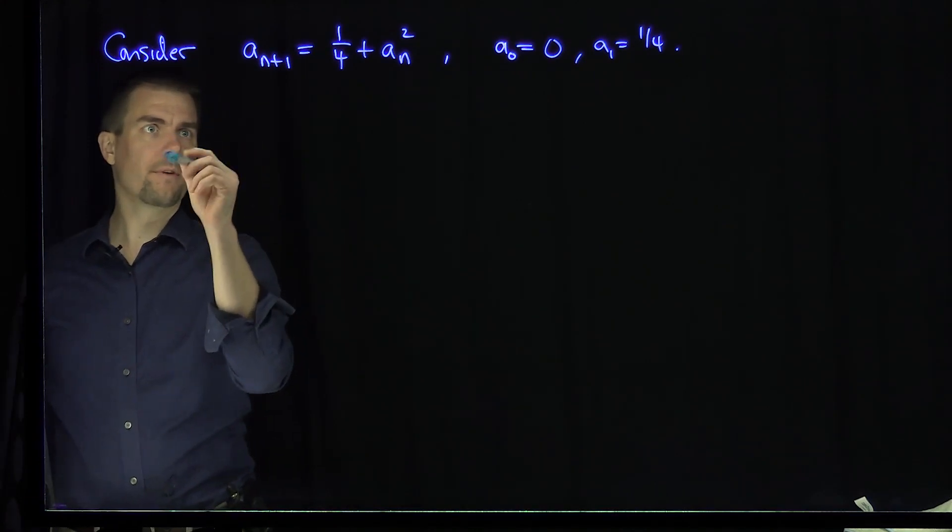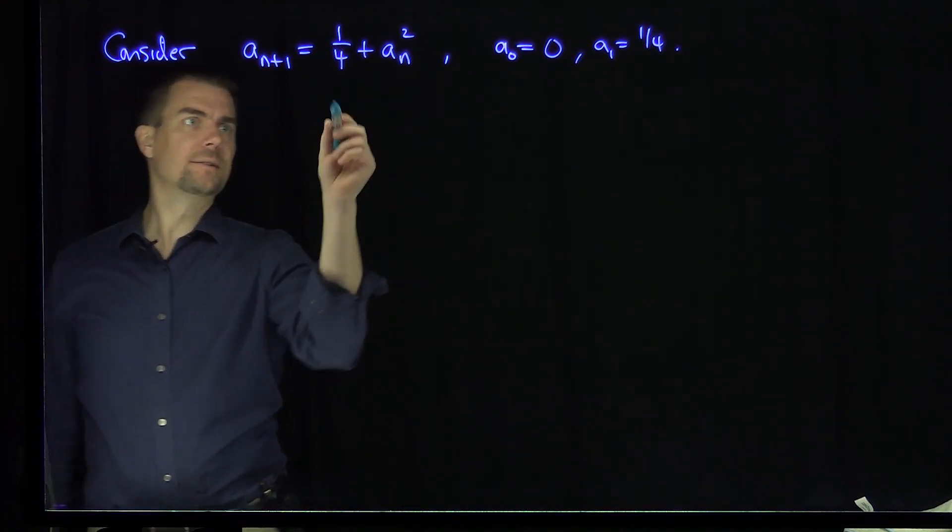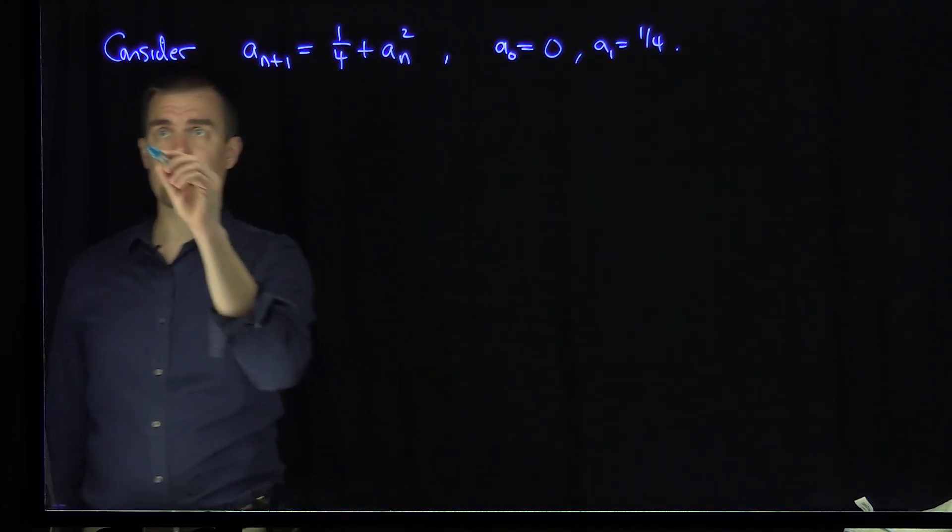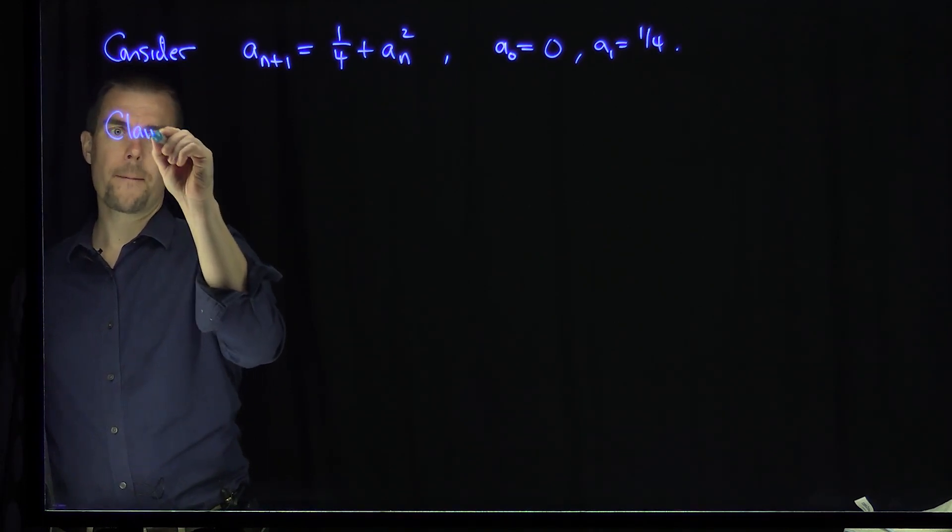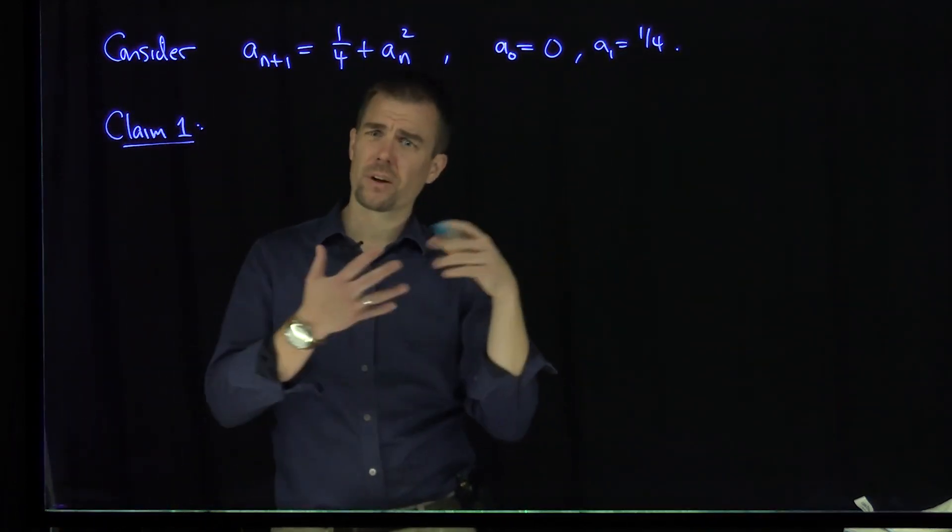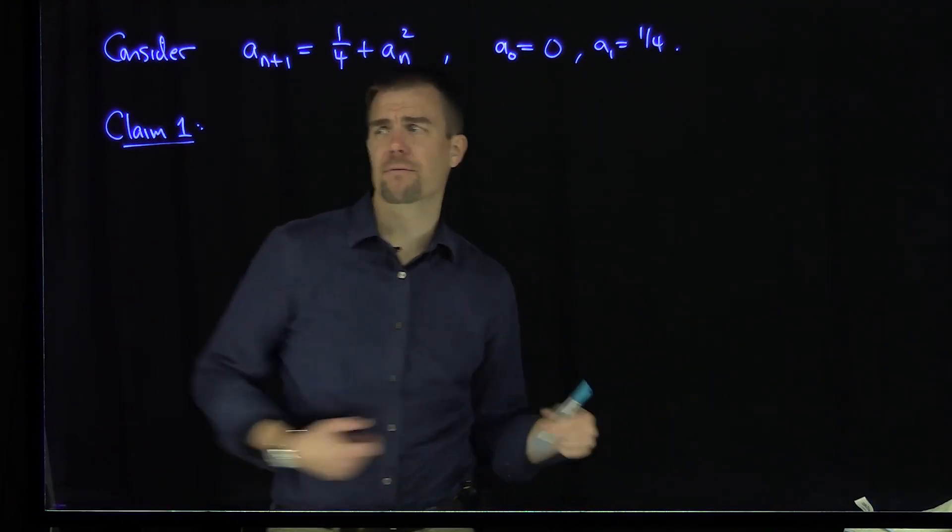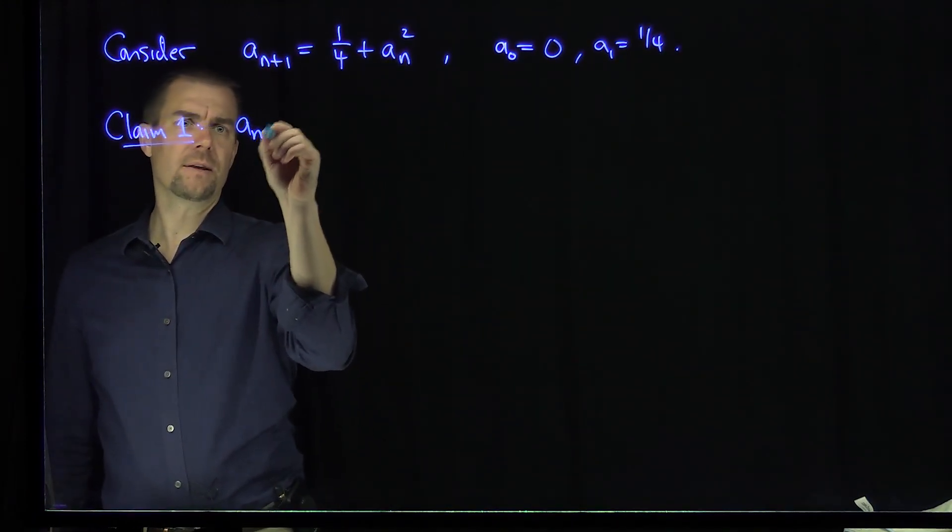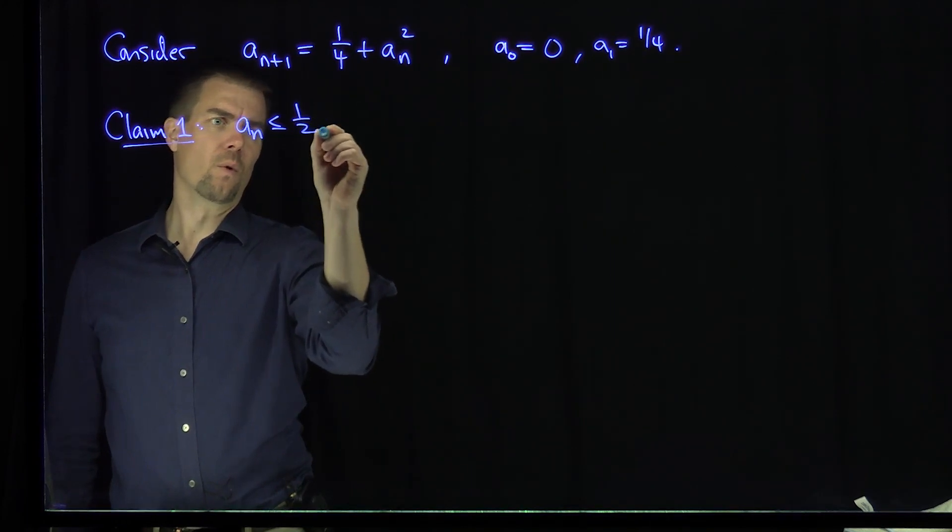First, observe the following. So I claim that the terms in this sequence are less than a half. So that's my first claim, claim one. And you can see that by doing some investigation. If you plug in a couple terms, you'll see that everything is less than a half. So I claim that a_n is less than or equal to one half.